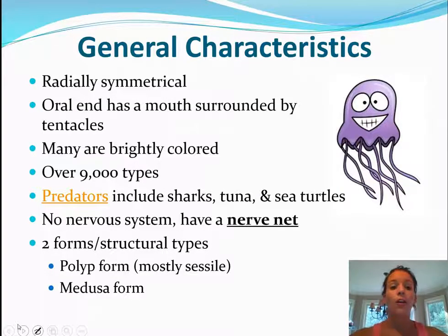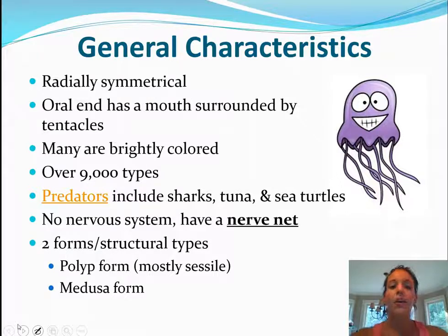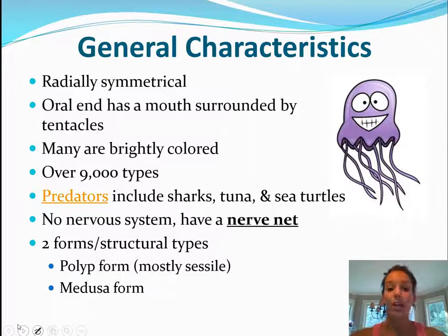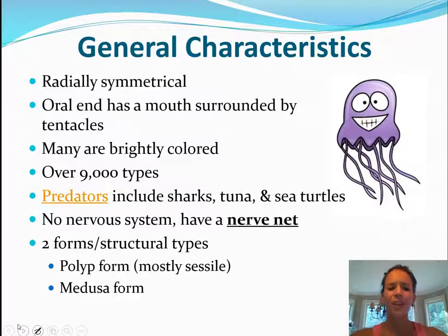First of all, they're radially symmetrical, which means any way you slice them they're going to be symmetric on both sides. The oral end also has a mouth surrounded by tentacles, so when we think of cnidarians we typically think of jellyfish and their stinging tentacles — you may have even been stung by one before. Also, many are brightly colored and there are over 9,000 types.